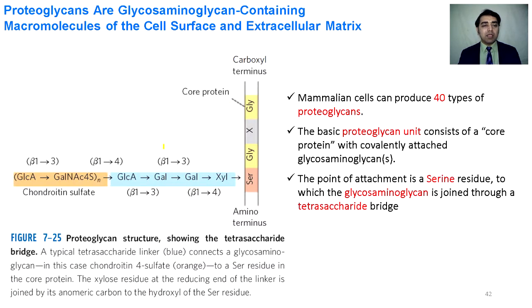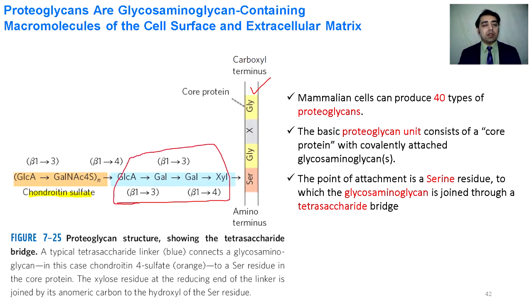In the detailed structure of proteoglycans, there are repeating units of glucuronic acid, four-sulfate, and N-acetylgalactosamine. This is chondroitin sulfate, attached to the protein component through a tetrasaccharide bridge. These four monosaccharides form a bridge between the chondroitin sulfate and the serine of the protein component.